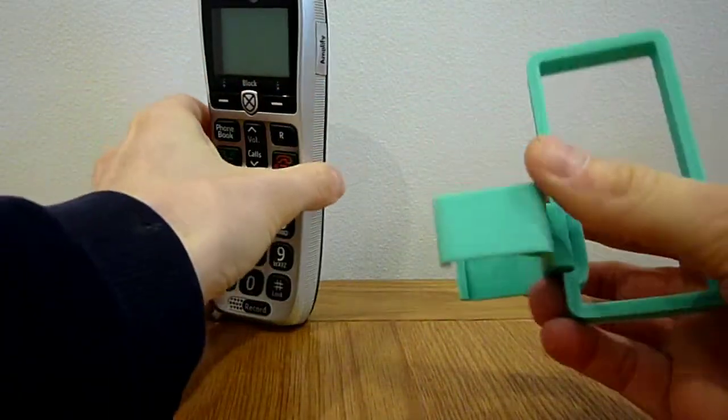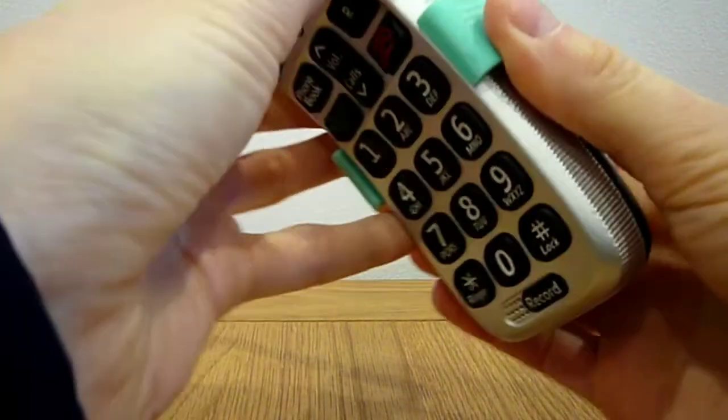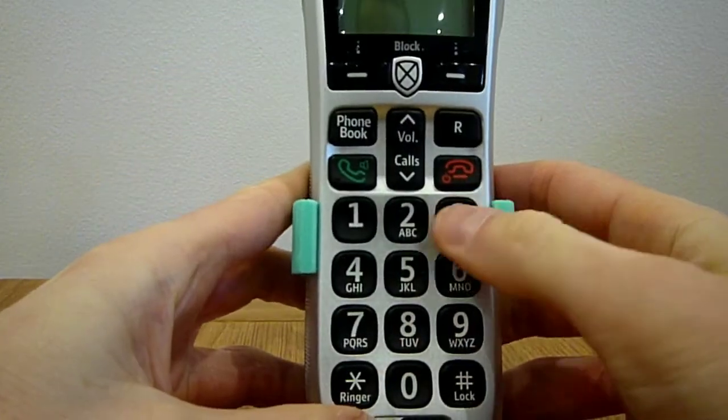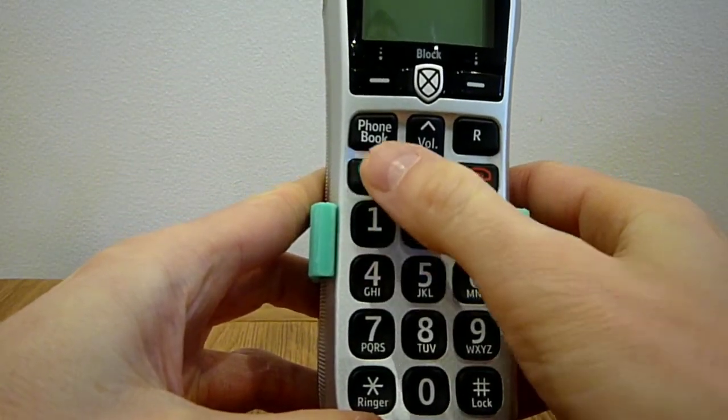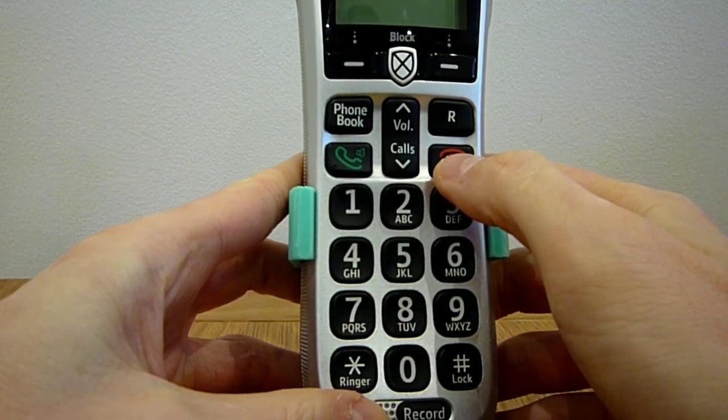The clip can then be slid onto the phone. It sits quite comfortably around the height of the row of the 1 and 4 keys. This way both the answer and the end call buttons are easily accessible.